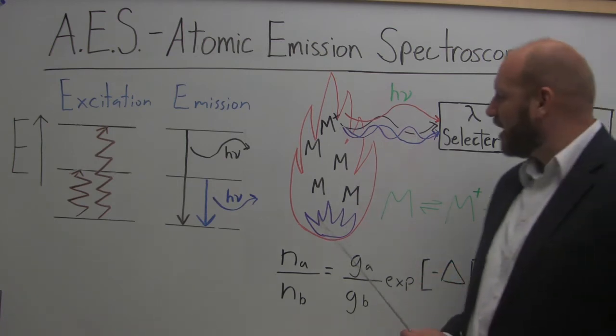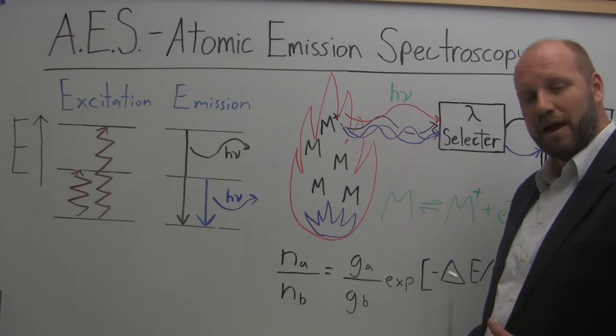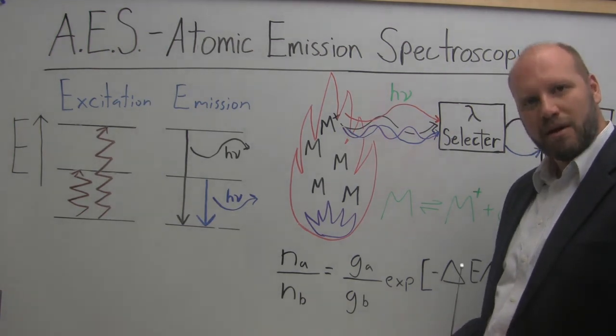Now, in my flame, I have some chemistry going on where I have my metal M and it can be ionized. If it's in an ionized state, it's not going to emit.